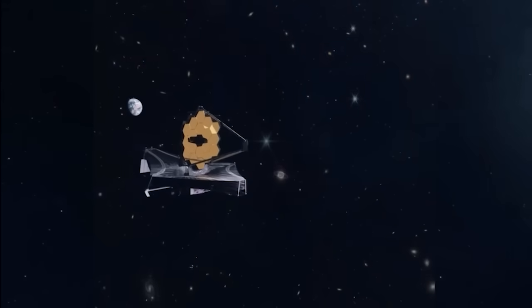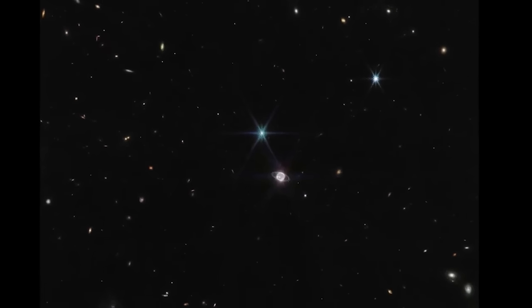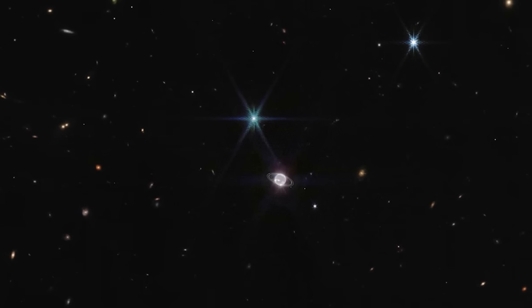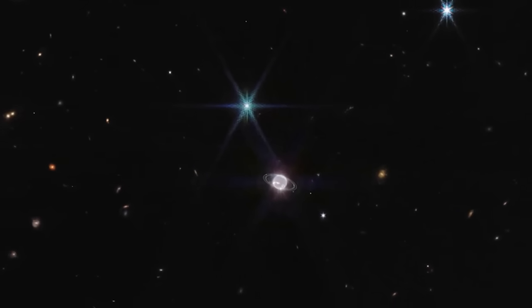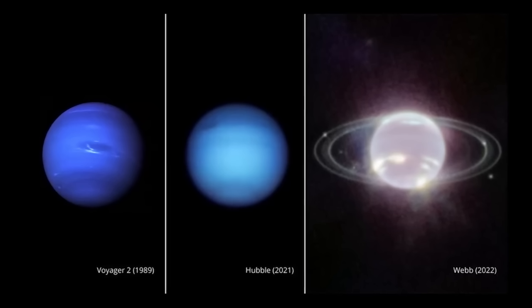Still in our solar system, James Webb has made the most breathtaking image of Neptune's rings in 30 years. Not since the Voyager 2 spacecraft flew past Neptune in August 1989 have we seen such a clear image of Neptune's rings.